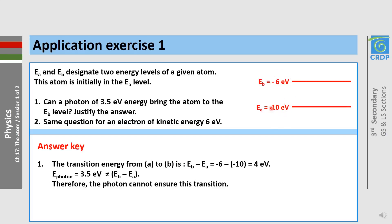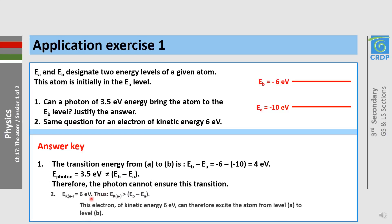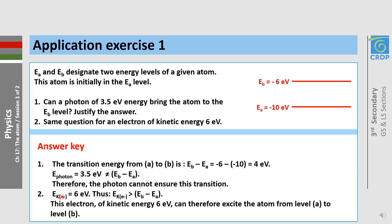EB is minus 6 eV and EA is minus 10 eV. Thus, EB minus EA equals 4 electron volt. The energy of the photon is 3.5 electron volt, which is different from EB minus EA. Therefore, the photon cannot ensure this transition. Concerning the electron: the kinetic energy of the electron is 6 electron volt, which is greater than EB minus EA. Thus, this electron can excite the atom from level A to level B.